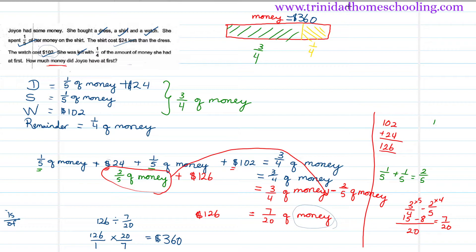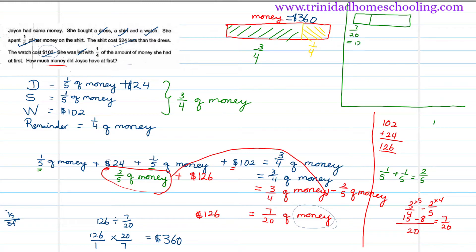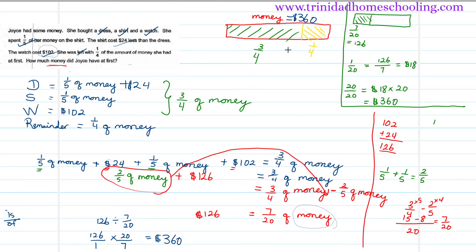If you don't understand that method, here's a second way using a bar. If we split the bar into 20 pieces and 7 out of 20 pieces equals $126, we can find the value of one piece: $126 ÷ 7 = $18. Then to find the whole — all 20 pieces — we multiply $18 × 20 = $360. The same answer. Always go back, read your question, and make sure you answer what they ask to get your maximum marks.